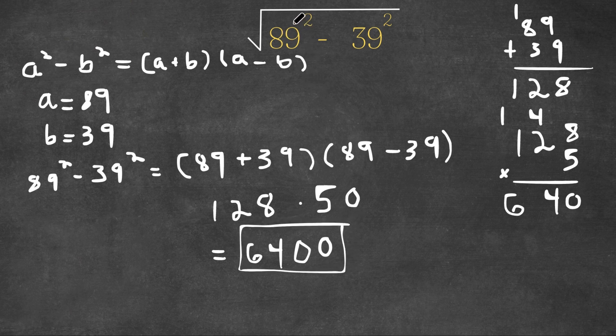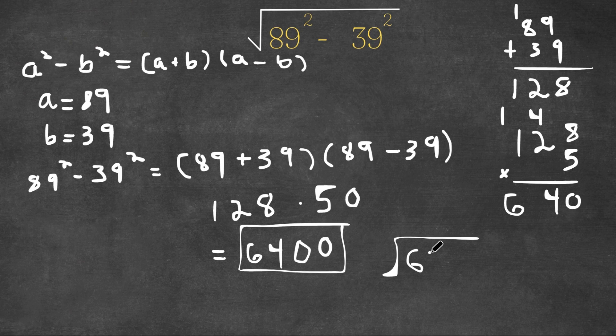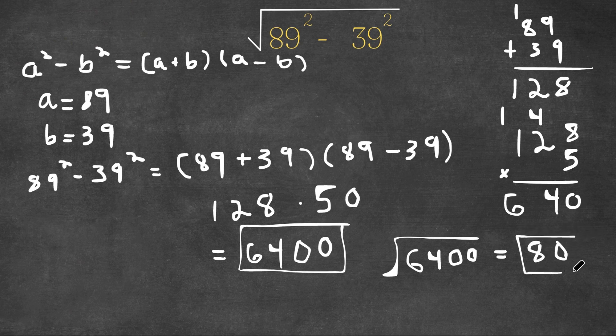However, we want to find the square root of 6400. So the square root of 6400 is 80. So now this is our answer.